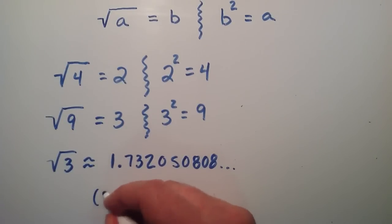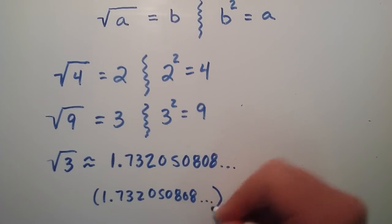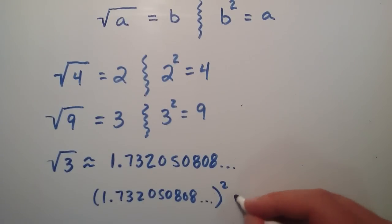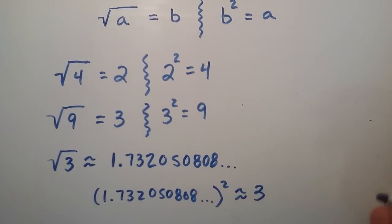So what that means is if we take that number, 1.732050808, and we square it or multiply it by itself, we should get the answer 3 back. If you were to actually plug in this number into your calculator and square it, you'll probably get a number that's really close to 3, but not quite. That's because the calculator just estimates this number, so it's going to give you a really close answer, but not an exact answer.